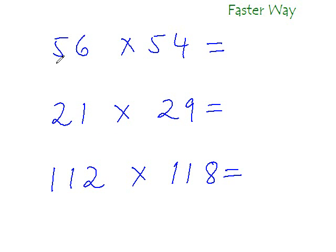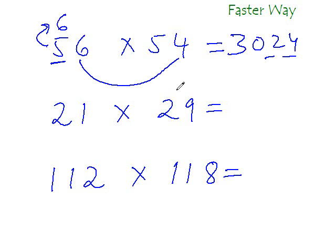After 5, the next number in the counting is 6, so 6 times 5 is 30. And for the last two digits, just find the product of the units digits. So 6 times 4 is 24. So the answer is 3024.